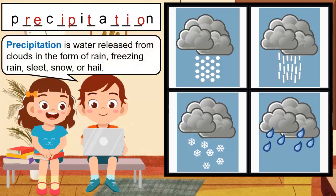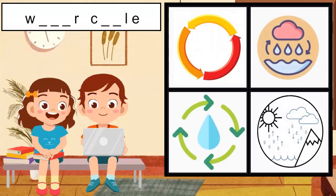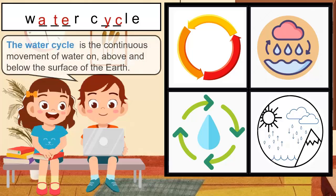Precipitation is water released from clouds in the form of rain, freezing rain, sleet, snow, or hail. The water cycle is the continuous movement of water on, above, and below the surface of the earth.